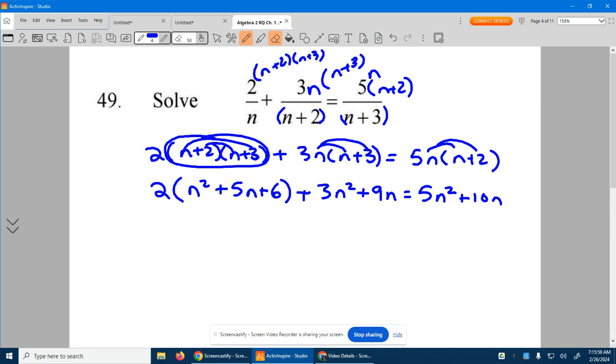So now we need to distribute this 2 through to each piece. So we get 2n squared plus 10n plus 12 plus the 3n squared plus the 9n equals the 5n squared plus 10n. So let's put together everything here on the left. We have 5n squared plus 10n on the right.